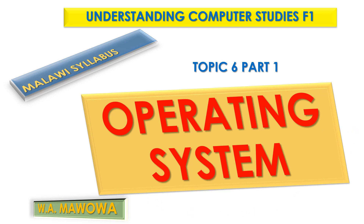We introduced the computer software, defining it as the set of programs that commands the system or the hardware what to do. We looked at the types of computer software, where we looked at system software and application software.